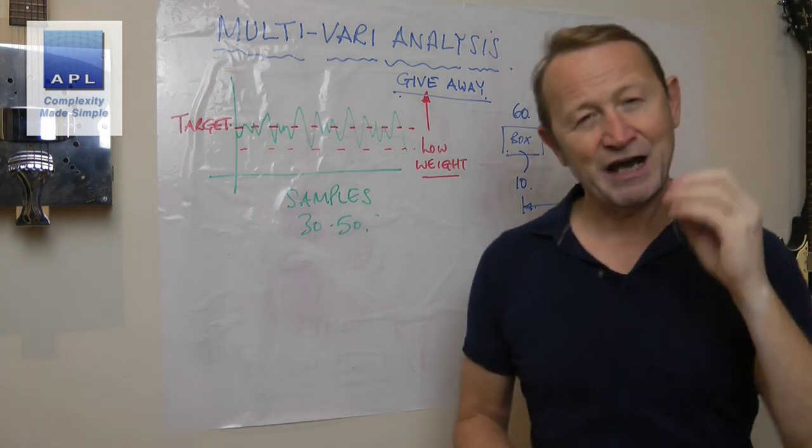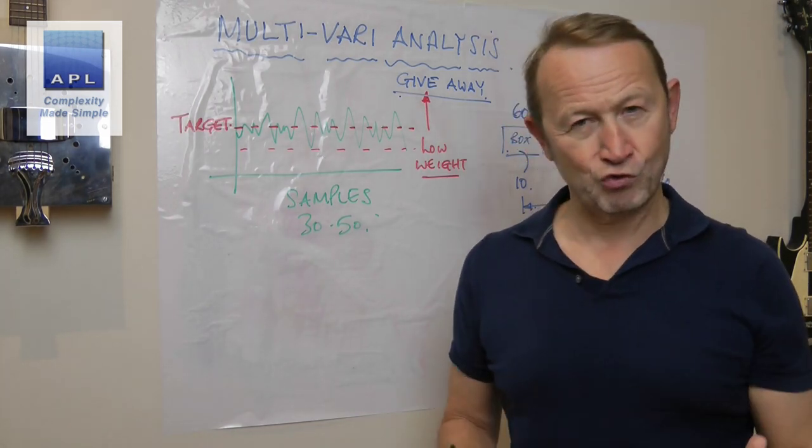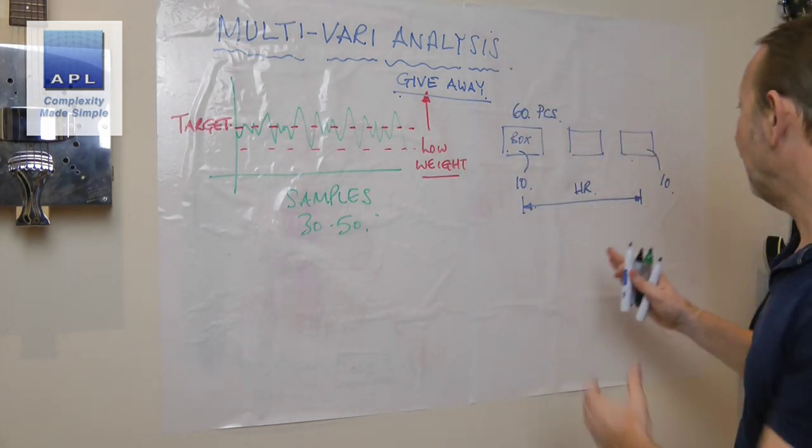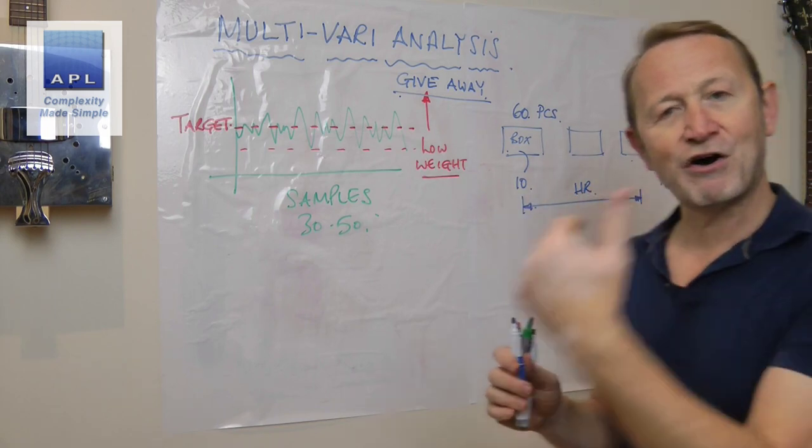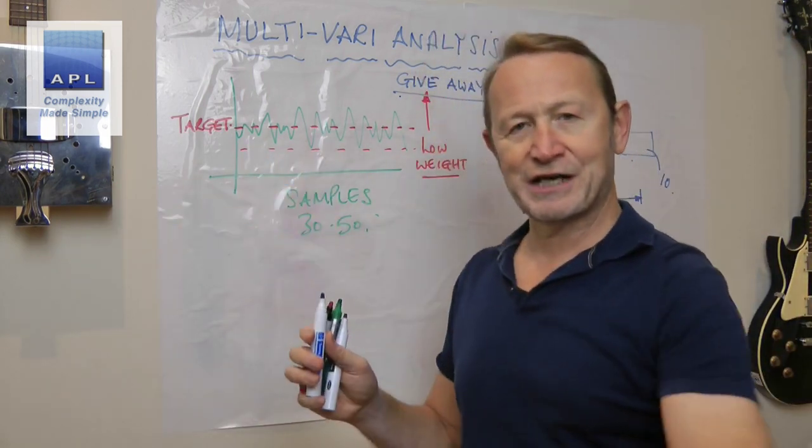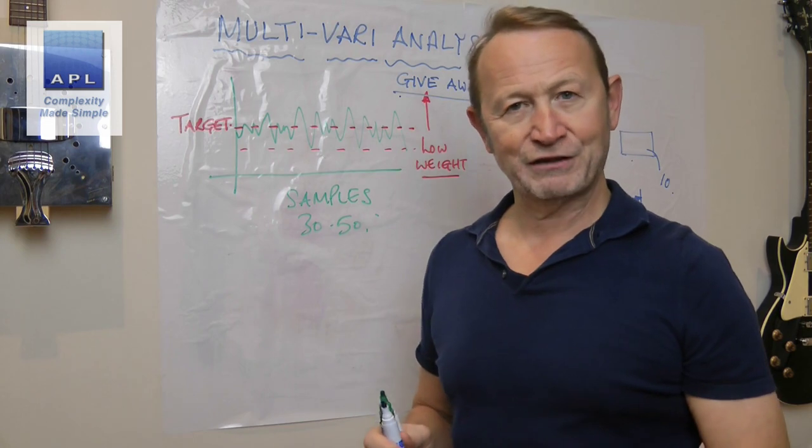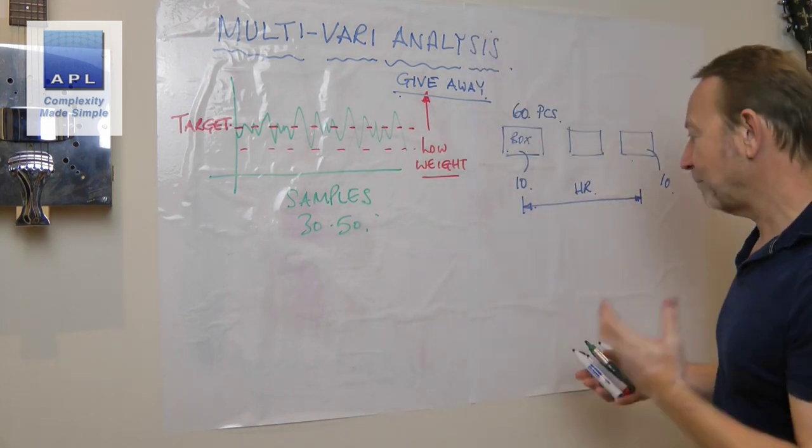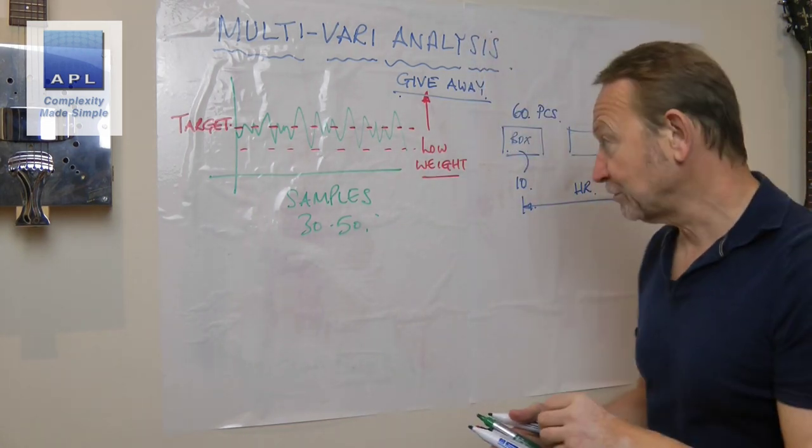When I go to each box, I mean these things are probably being made within minutes of one another. I would probably wait maybe an hour later. So I'd select a box, then an hour later I'd select a box, and I take ten, take ten, take ten.